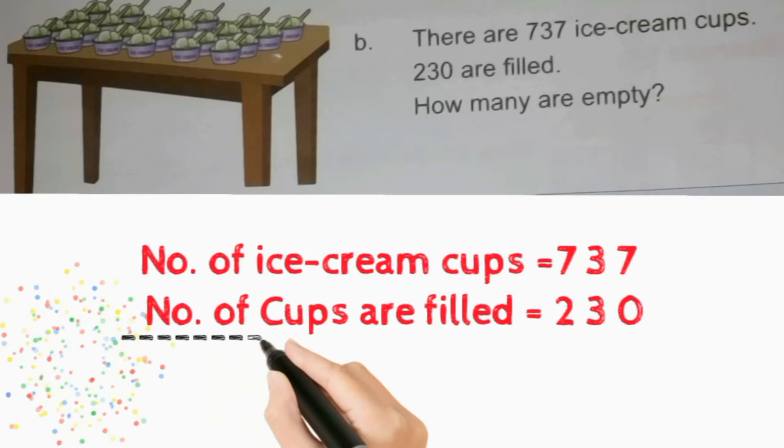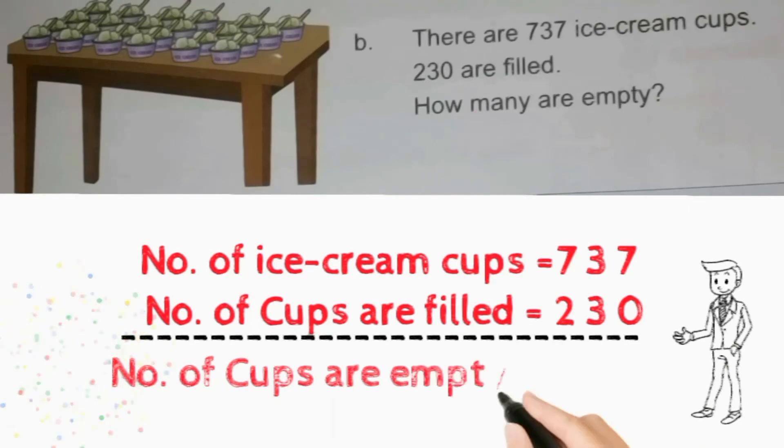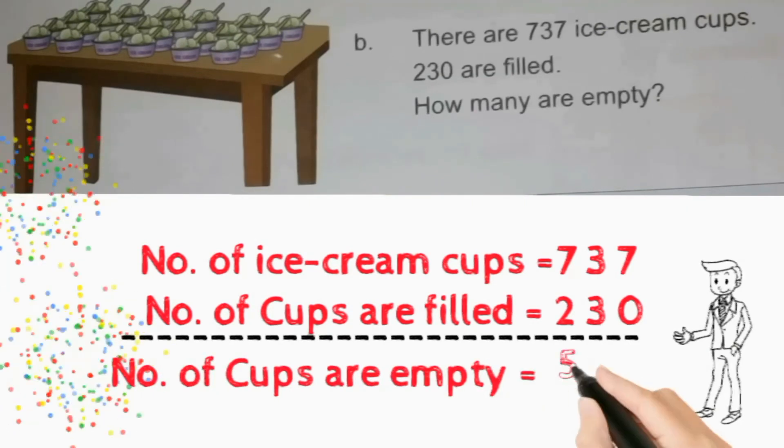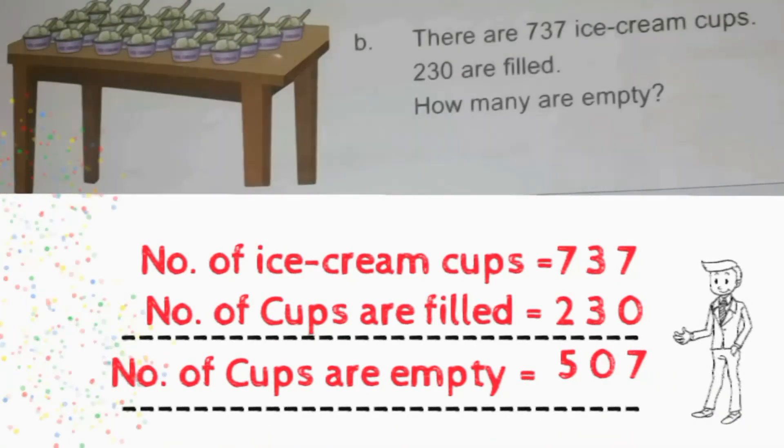How we write a statement: Number of ice cream cups equals 737. Number of cups are filled equals 230. Number of cups are empty equals 507. Like this we have to do subtraction stories.